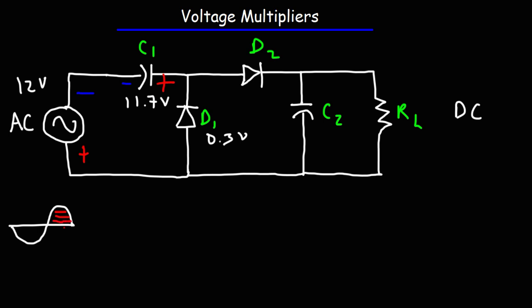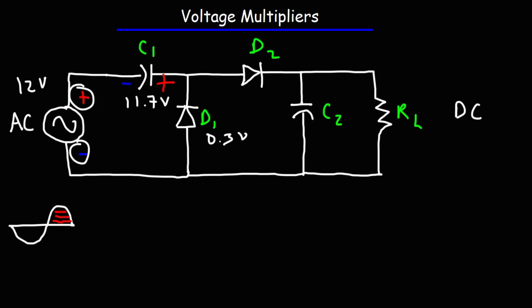Now let's see what's going to happen during the positive half cycle of the sine wave. The polarity across the 12-volt AC source is going to change — the positive side will now be at the top and the negative side at the bottom. Notice the polarities of the AC signal and C1 are positive to negative, so like those two batteries in series, the voltages are now additive. If we call the bottom ground at zero, the top of the AC source will be at 12 volts, and at the junction the potential will be 12 plus 11.7, which is 23.7 volts.